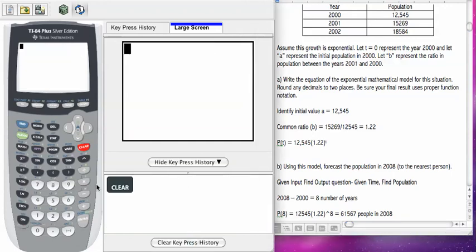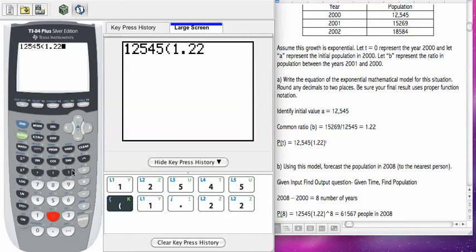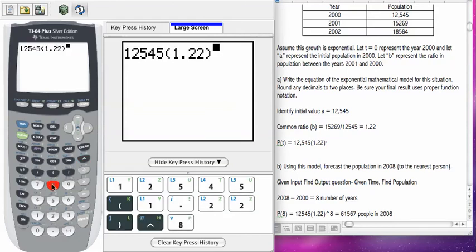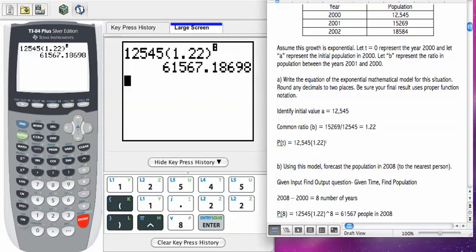Let's see how that works on the calculator. So that's 12,545 times 1.22, and then exponent 8, enter. We get the value you see there. We need to round to the nearest whole person. So we can't have .1 people. So we would have 61,567 people in 2008.